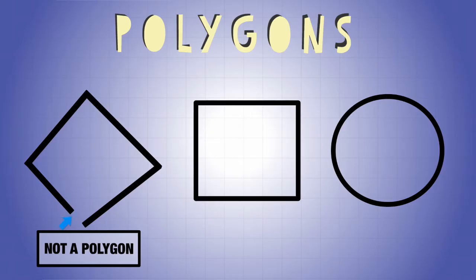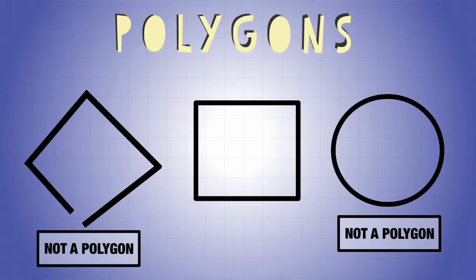...of this right here. It's not a closed figure. It needs to be a closed figure in order to be a polygon. Now both of these are closed figures, but I will tell you that this one is also not a polygon because...